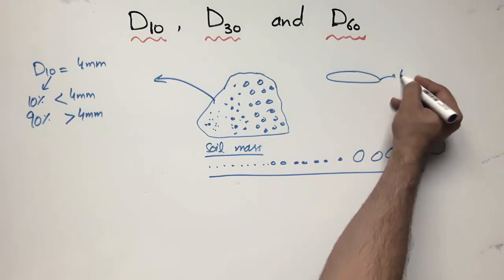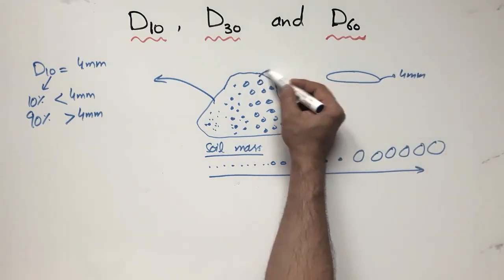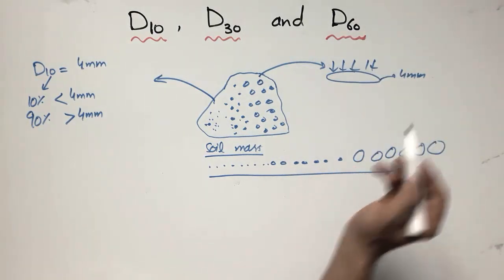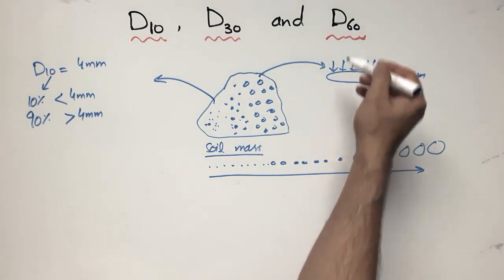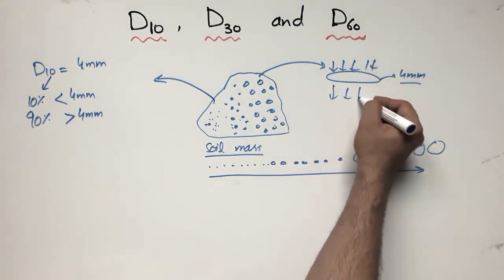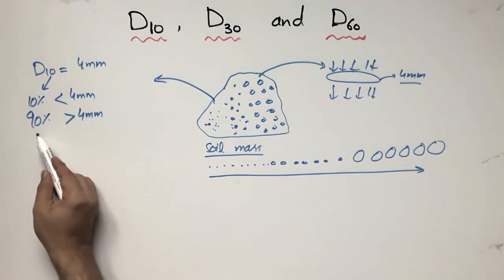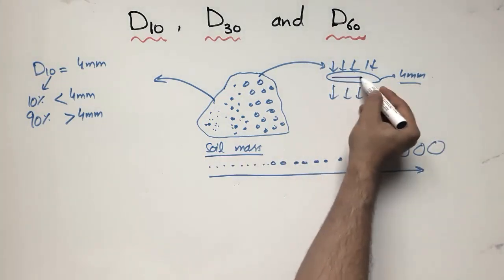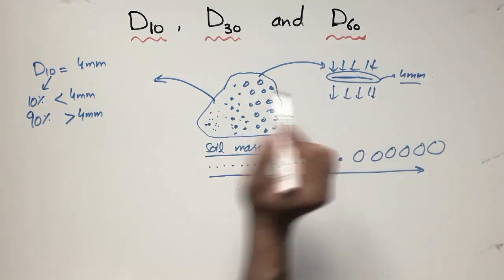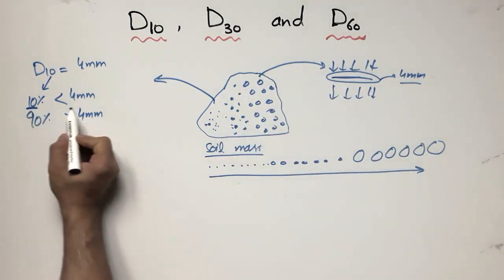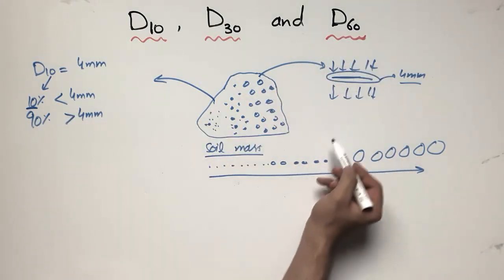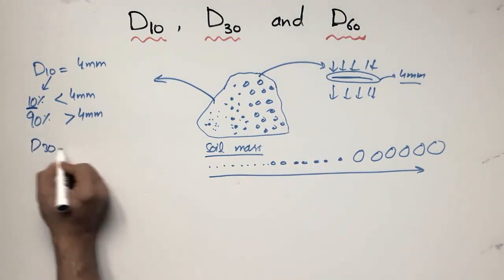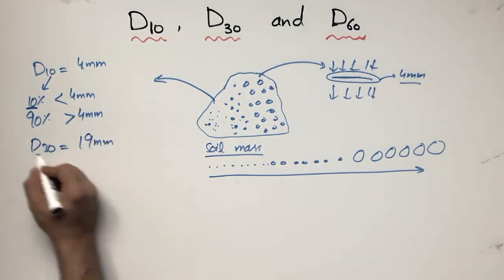This can also be understood using a sieve. If there is a sieve of 4 millimeter size and I put this soil sample into it, only particles of 4 millimeters or less will pass through the sieve, while the remaining 90 percent of particles greater than 4 millimeters will stay on the sieve and not pass through.